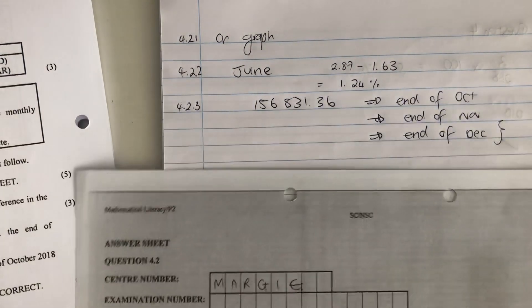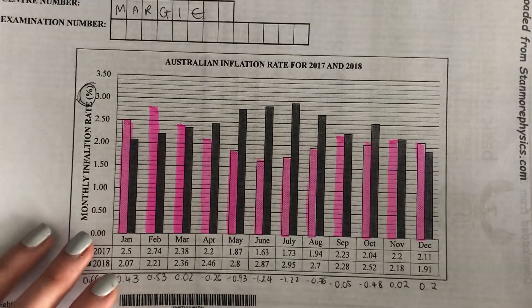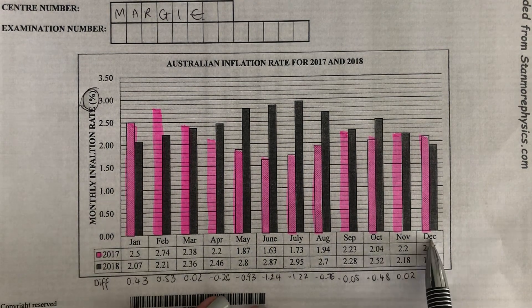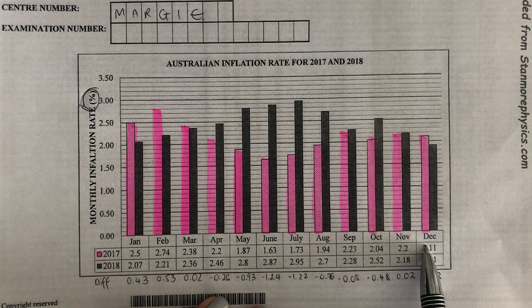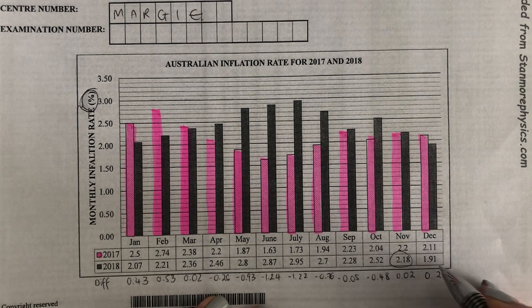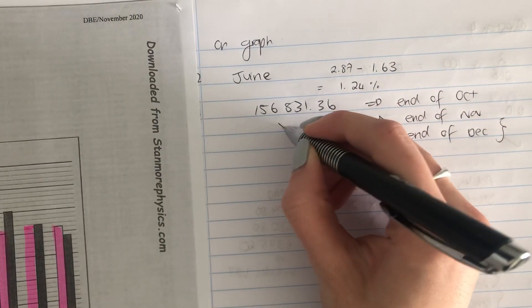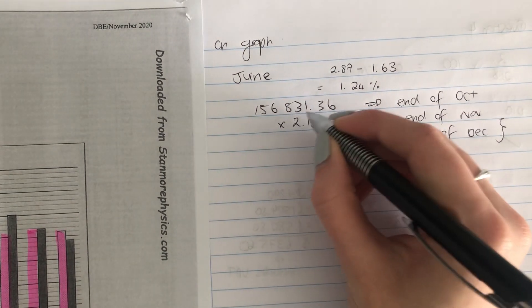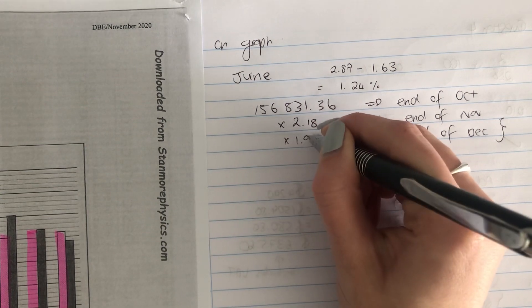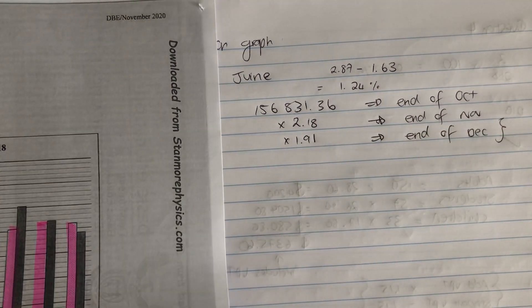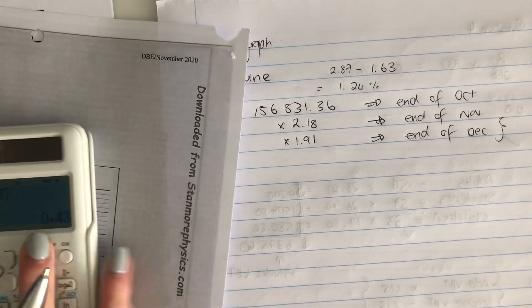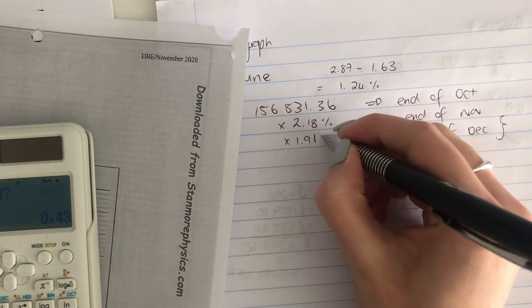We need to figure out the cost at the end of November and then the end of December, because the end of December is equivalent to the beginning of January. Since we were given monthly rates, to get from October to December you have to go through November. We're going to use the November inflation rate of 2.18% and the December inflation rate of 1.91%.